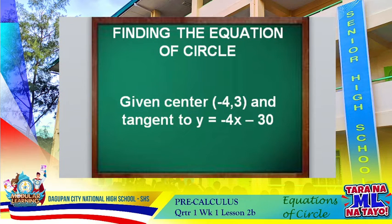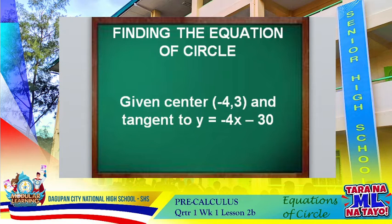We have here finding the equation of a circle given the center, which is negative 4, 3, and a tangent line, which is y equals negative 4x minus 30. To identify the equation of a circle, we need to consider the coordinates of the center and of course the length of the radius.